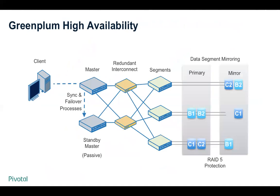Let's talk about the parallel nature of Greenplum. On screen is a high-level architectural diagram. The client connects through the master, which has a corresponding standby master node for an active-passive failover situation. In the middle are redundant interconnects or switches. On the right are segment servers — the units of parallelism — each with a primary segment as well as mirrored segments for high availability. When data comes into the cluster, it is initially written to the primary and subsequently written directly to its mirrored pairs, providing high availability and redundancy. It's also recommended that the disks on which segments keep their data are RAID 5 or better protected.